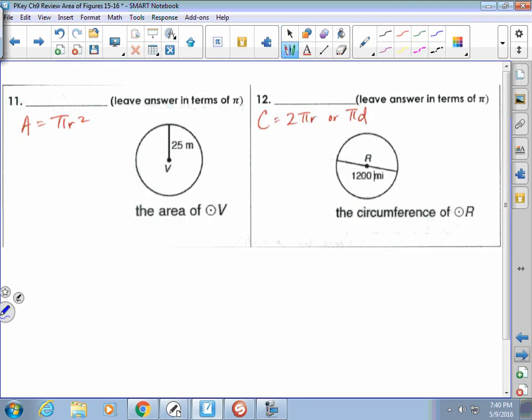On the circle part, just make sure you can give me your answer in terms of pi. We've done this. We did this last six weeks. So the radius is 25. So we're going to do basically 25 squared and put our pi. So this was 625 pi. And then circumference. We have the formulas. This is the diameter, so I'm done. 1200 pi. Whatever the diameter, just put the pi behind it. That's our circumference.